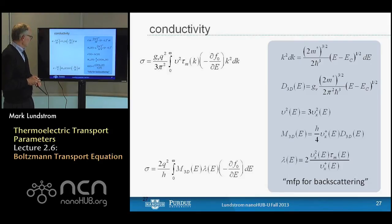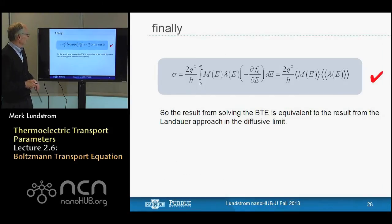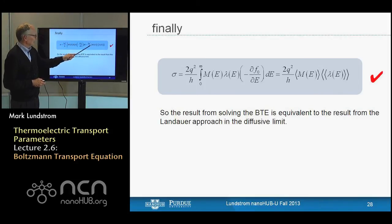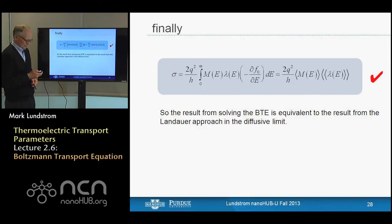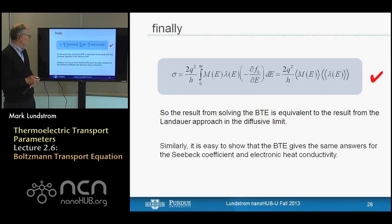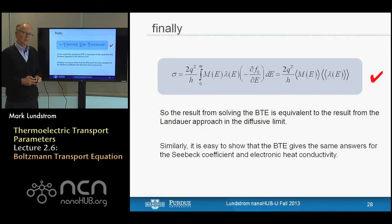If the scattering time is energy dependent, as it usually is, our result would involve a specially defined average scattering time divided by m. Going back a few steps to when we converted the sum to an energy integral, we can re-express the result using the Landauer framework: we find that we can write conductivity as the quantum of conductance times the average number of channels in the Fermi window times a specially defined average mean free path — exactly the result from the Landauer approach, as it should be.